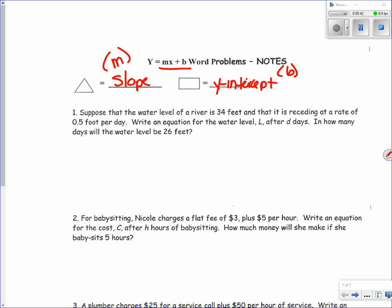Let's start with number one. Suppose that the water level of a river is 34 feet and it is receding at a rate of 0.5 feet per day. Write an equation for the water level L after D days, and in how many days will the water level be 26 feet? We've got two things to do: first write an equation, then figure out how many days.